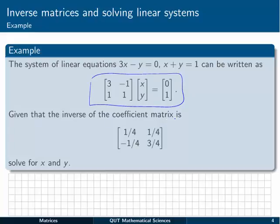Given that the inverse of the coefficient matrix [3, -1; 1, 1] is given by this matrix, we want to solve for x and y. I'm just giving you what A inverse equals.